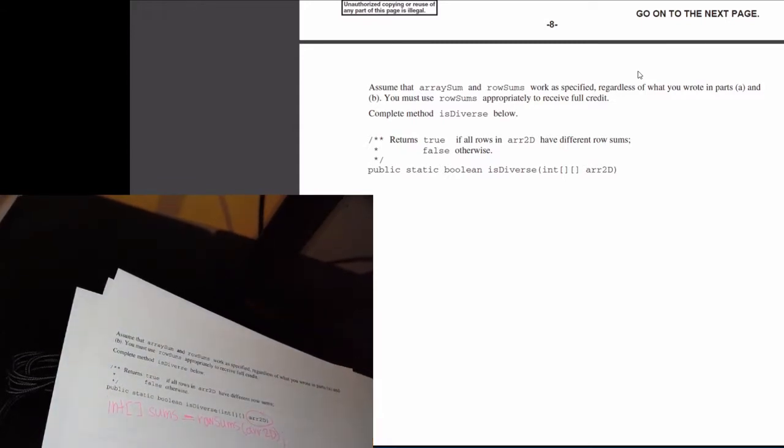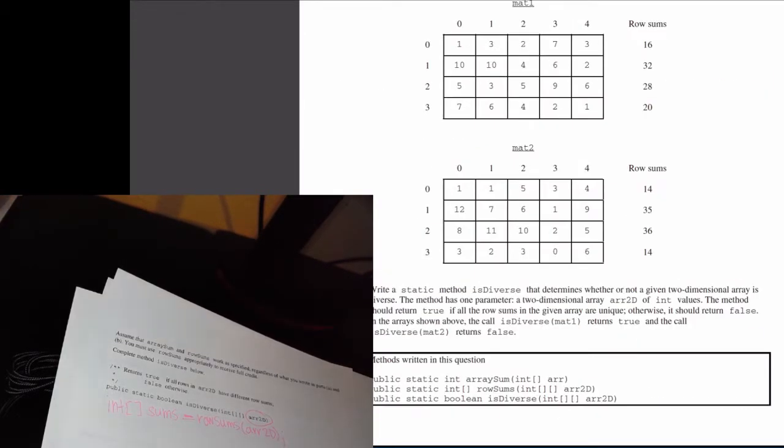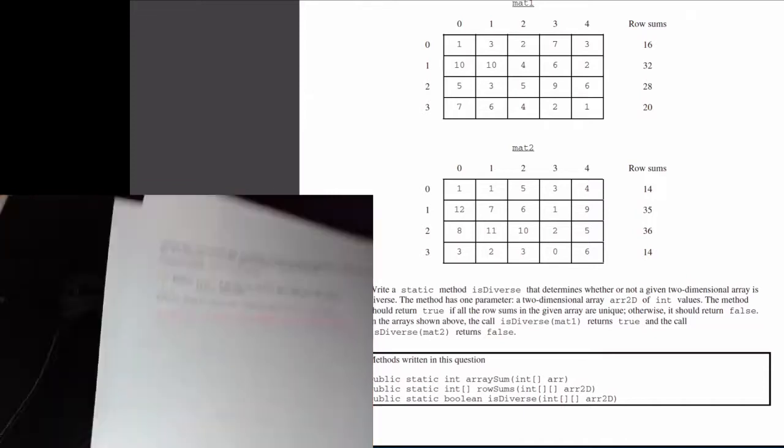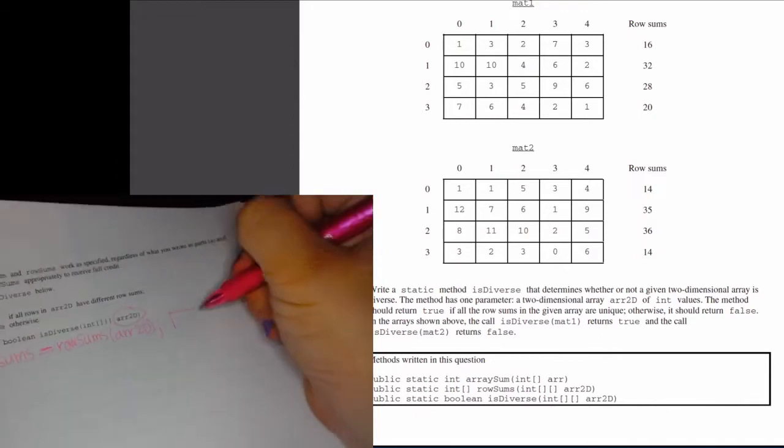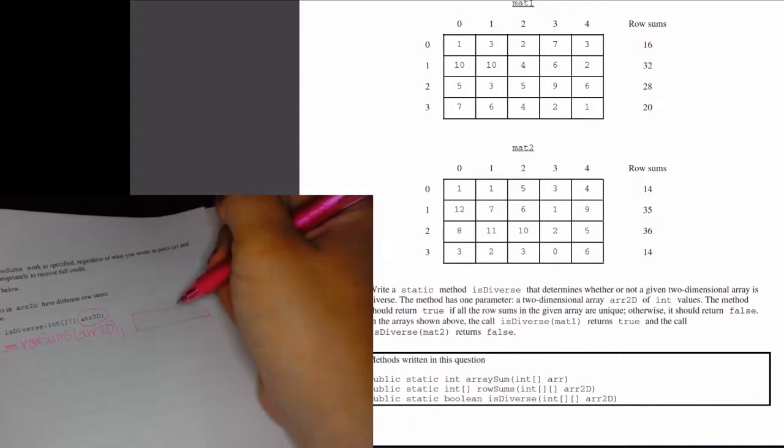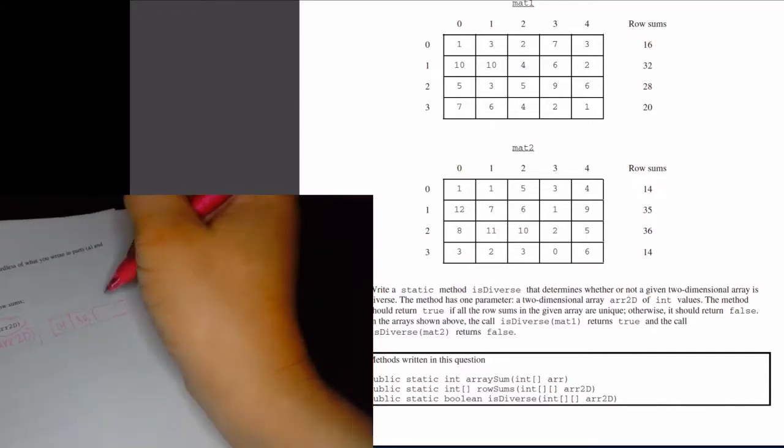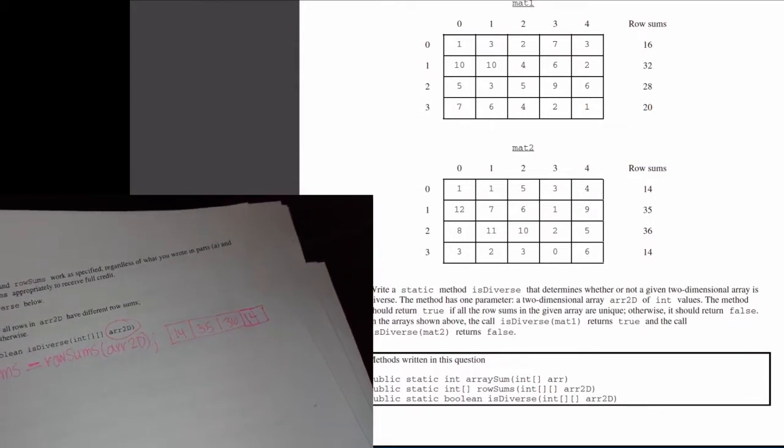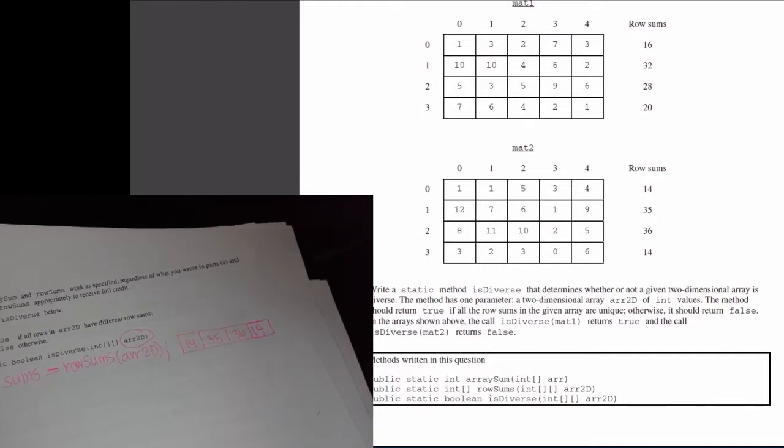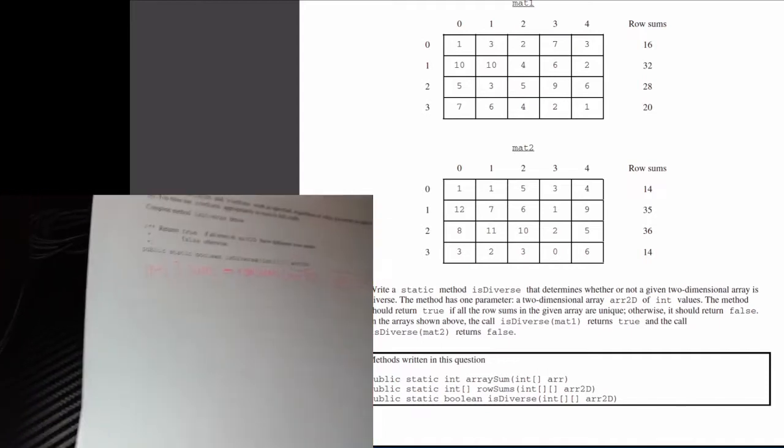So if I look at this example right here of MAT2, what's going to get spat out by this method call is a 1D array that looks like this: 14, 35, 36, and 14. Just the sums of each of the row of MAT2. That's what's going to get assigned to sums, or rather it'll refer to that array.